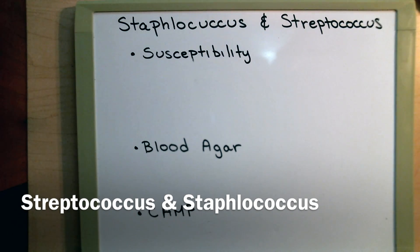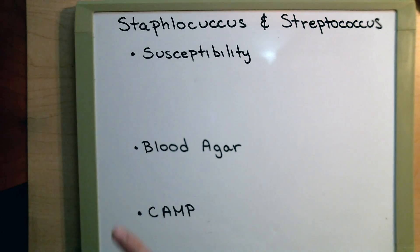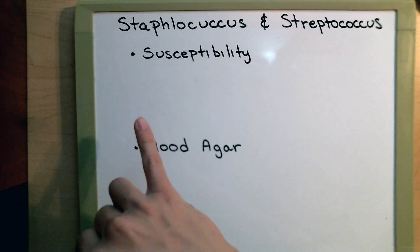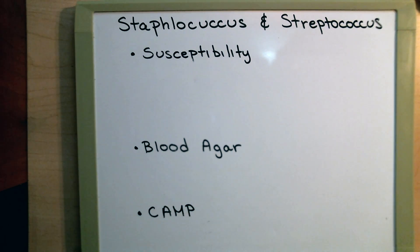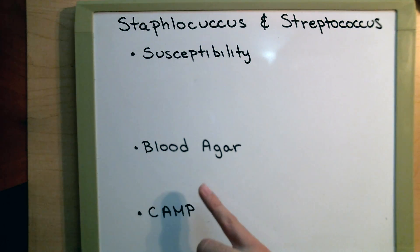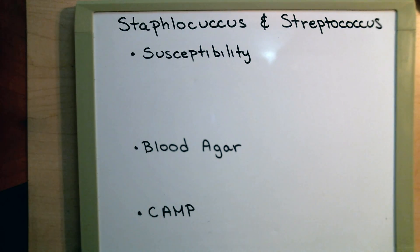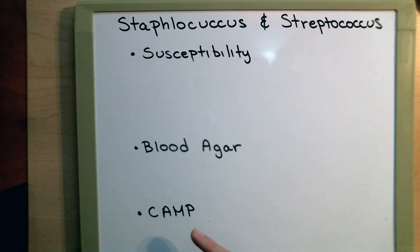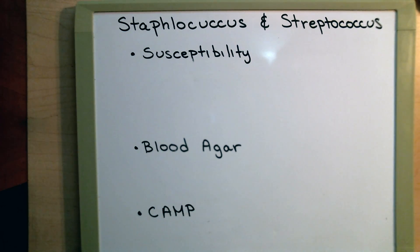Hi everyone. In this video we're going to go over staphylococcus and streptococcus. We're going to be looking at three different tests: your susceptibility tests where we're looking at three different antibiotics, blood agar plate where we're going to look at different types of hemolysis, and the last one is our CAMP plate which looks for synergistic effects between two different types of bacteria. With that said, let's get started.